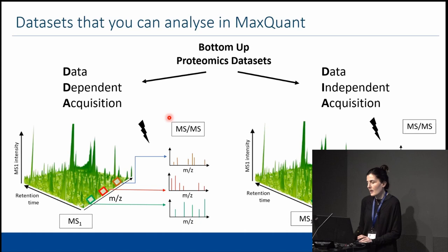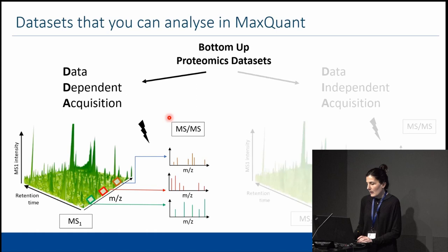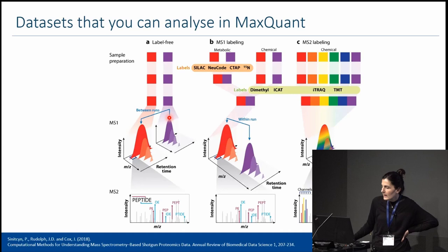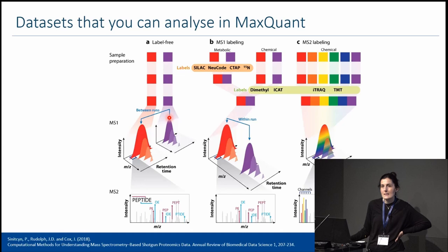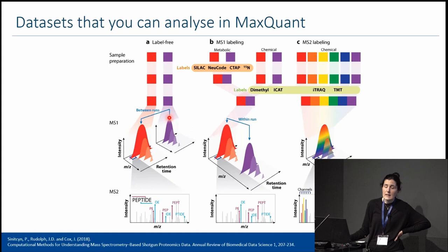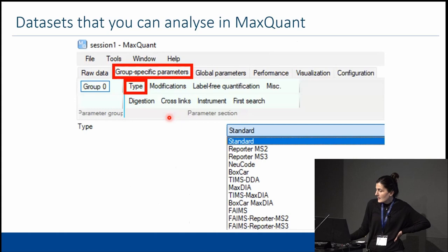Today is about DDA datasets and quantification. We can do all different kinds of quantification in MaxQuant: label-free, MS1-level labeling datasets, and MS2-level labeling datasets. MaxQuant has different algorithms for quantification in each of these cases. Later I will talk about labeled datasets and quantification, and then Carlo will continue with label-free quantification. If you're curious, you can go to MaxQuant and look at the datasets available to run.